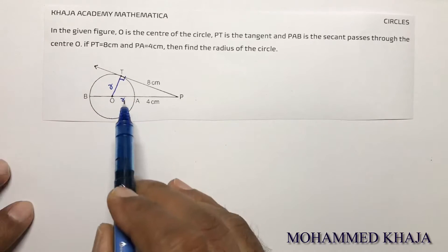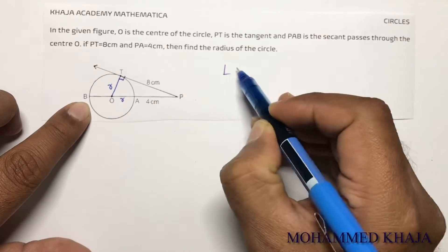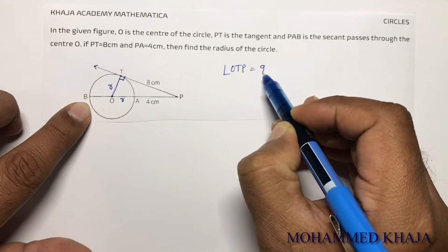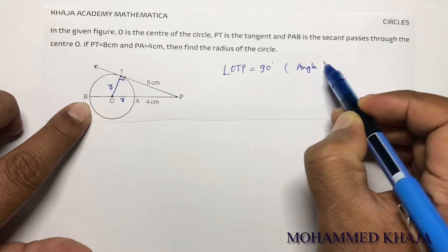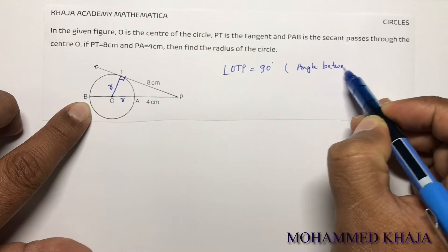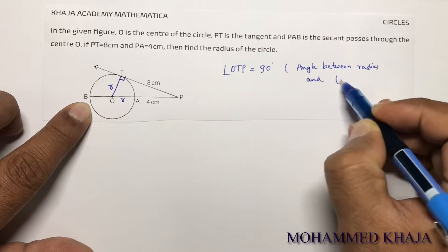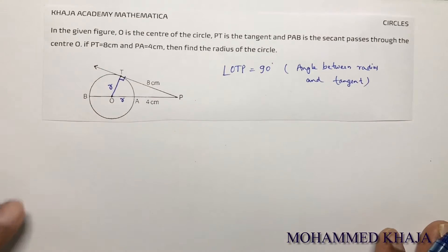Now in triangle OTP, angle OTP is 90 degrees because the angle between radius and tangent is 90.